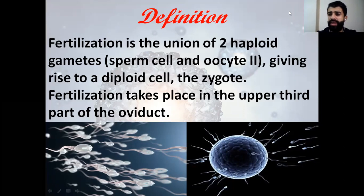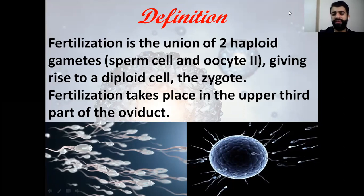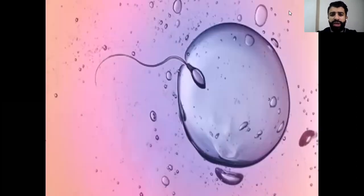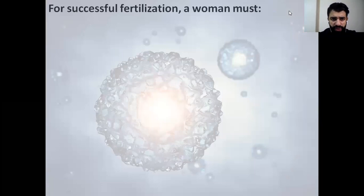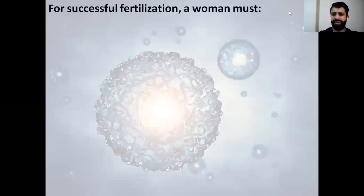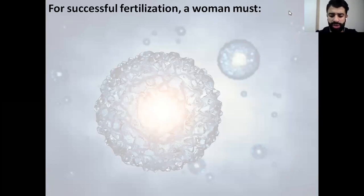Fertilization takes place inside the upper third part of the oviduct, or the fallopian tube. Now, for successful fertilization, what are the characteristics that should be available in the man and in the woman for fertilization to occur successfully?